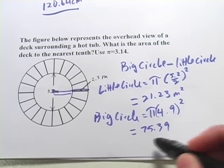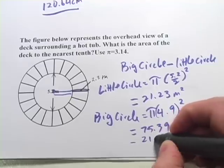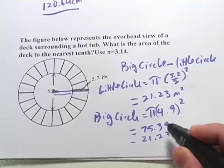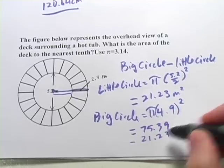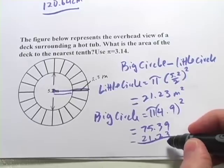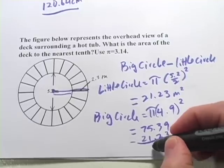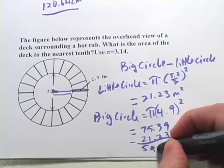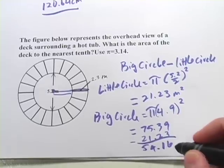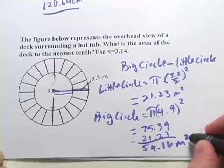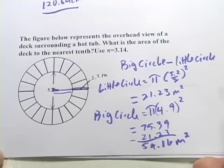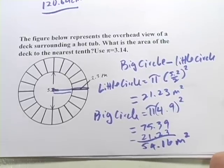So now we're going to subtract 21.23. So that's the little circle we're subtracting from the big circle. And that comes out to 54.16 square meters. So that's the area of the deck.